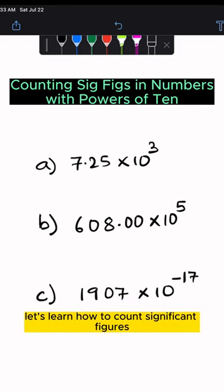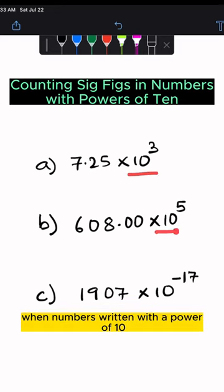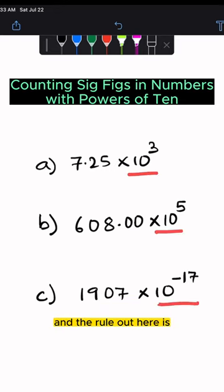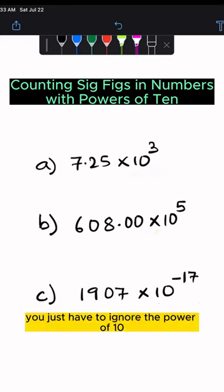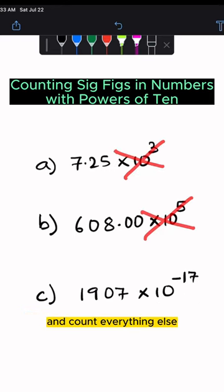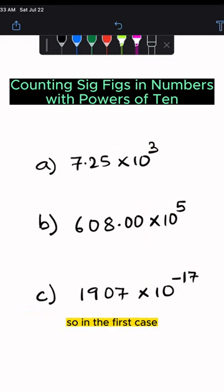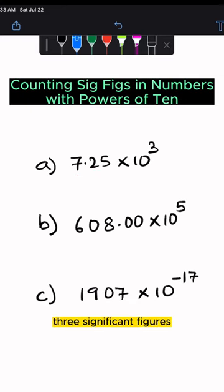Let's learn how to count significant figures when a number is written with the power of 10. The rule is you just have to ignore the power of 10 and count everything else. So in the first case, we have 1, 2, 3 significant figures.